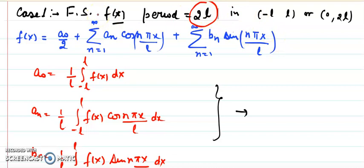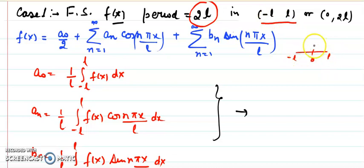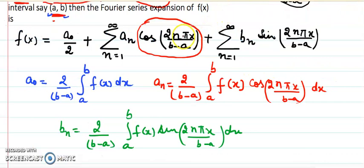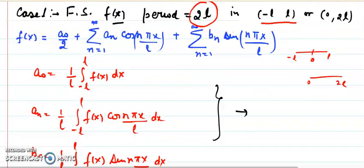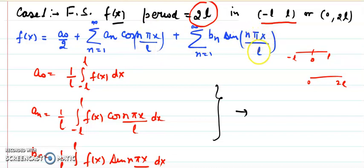For a periodic function of period 2L, the interval is either from −L to L or from 0 to 2L. Using our formula, the angle becomes 2nπx/(2L), and since 2 cancels, the angle simplifies to nπx/L for both cosine and sine terms. So for any function of period 2L, you can fit it into this simplified general form with angle nπx/L regardless of which interval is given.